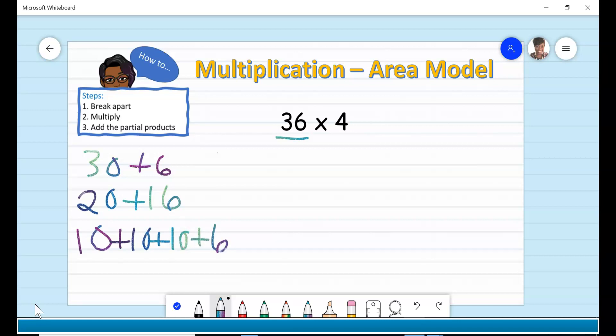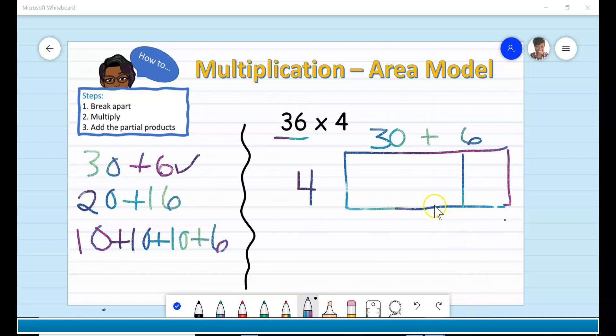All of these combinations will work. However, you want to make sure that you teach your child to break the factors up by decades to make it easier for mental math computation. Although we have several options as to how to break up the 36, I'll go with 30 plus 6. This will make for easier mental math computation. Now that I have decided how I want to break up my 36, it is time to make my area model. This area model only requires two columns and one row, because I broke up my 36 into 30 plus 6, and then one row for the 4.